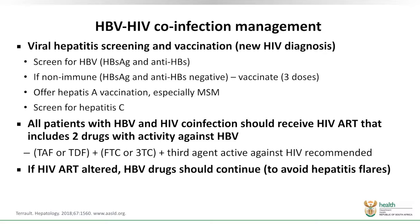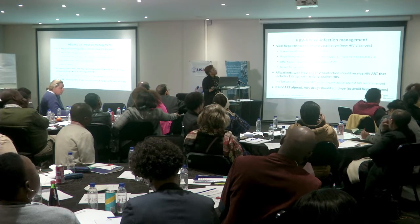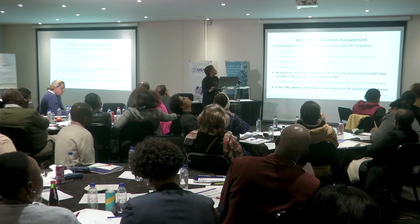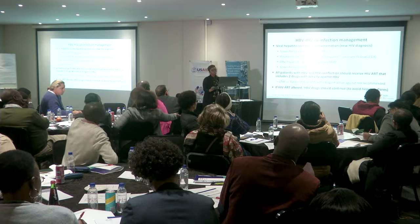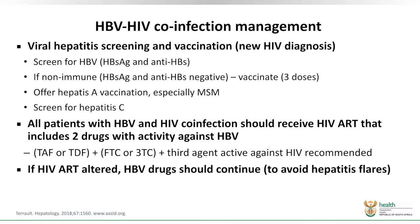To manage a hepatitis B and HIV co-infected patient, we screen for hepatitis using the surface antigen and hepatitis B surface antibodies. If they are non-immune, they are vaccinated with the three doses — 0, 1, and 6. We need to offer hepatitis A vaccination, especially to MSMs, and screen them for hepatitis C as well. All patients who are hepatitis B and HIV co-infected need to have a nucleotide regimen in place with two agents active against hepatitis B.